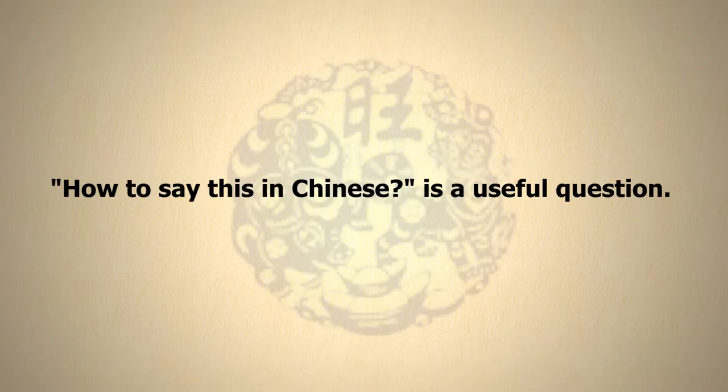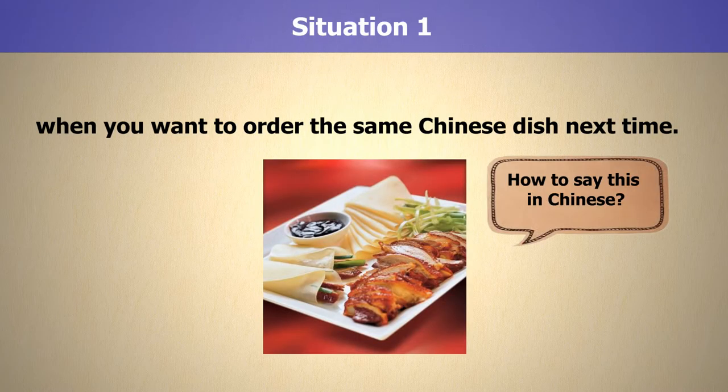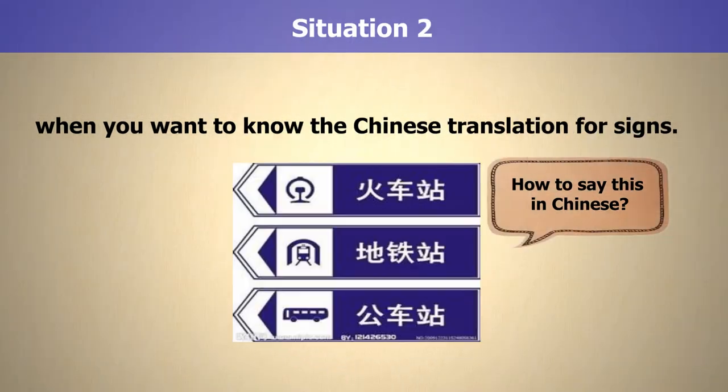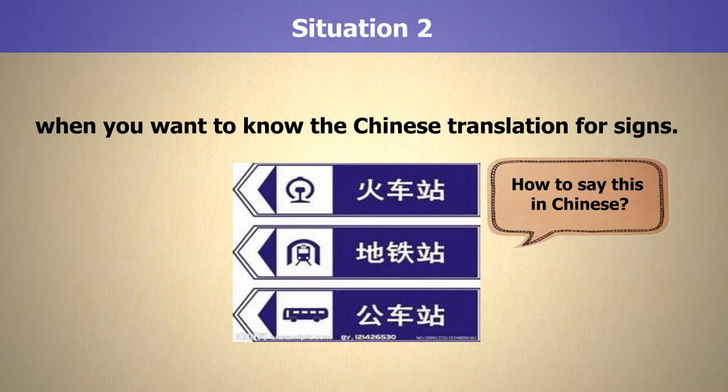When learning Chinese, it is important to learn how to ask what something is called in Chinese. Then, you can point to an item and ask a native speaker, how do you say this in Chinese? Or, how do you call this in Chinese? It is an easy way for a traveler in China to communicate with a native speaker and to learn the language one word at a time.